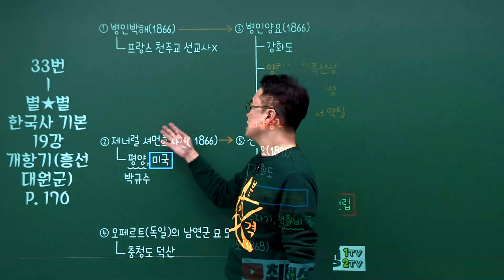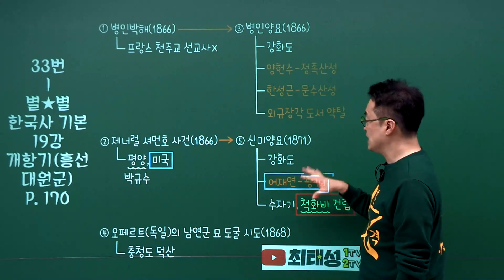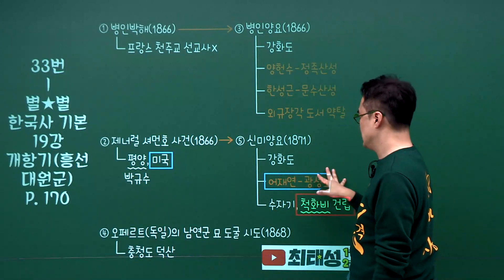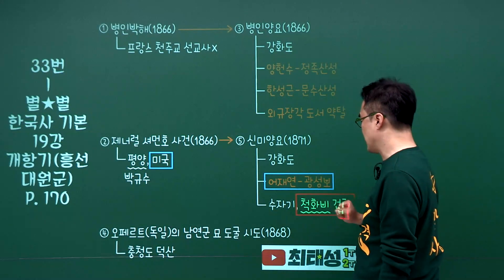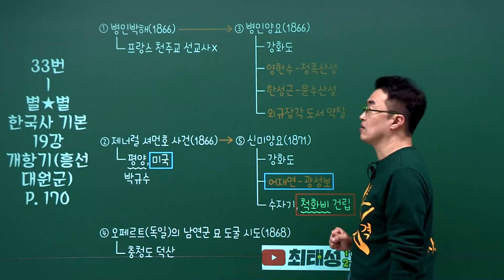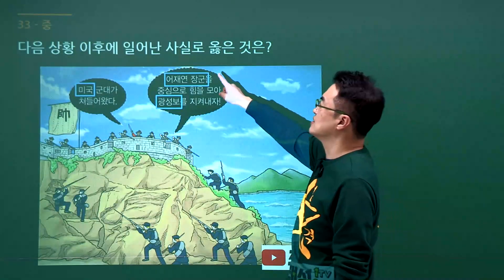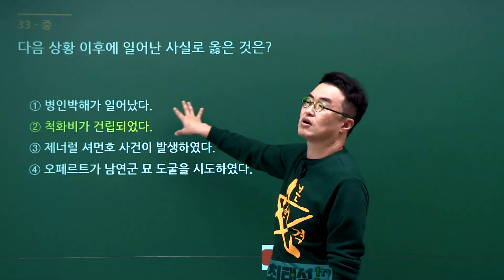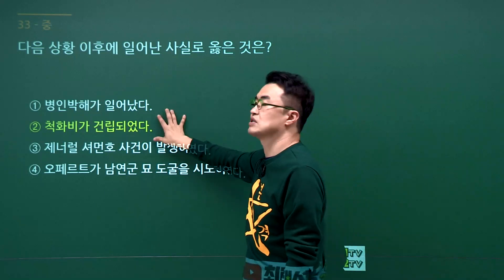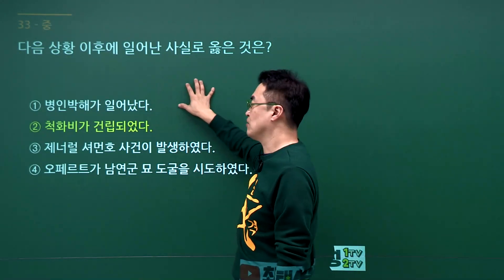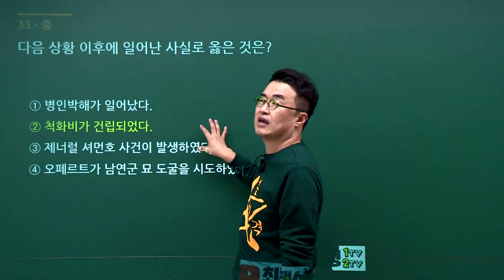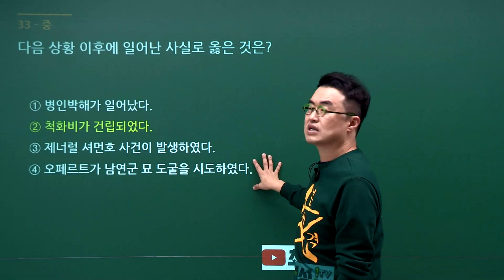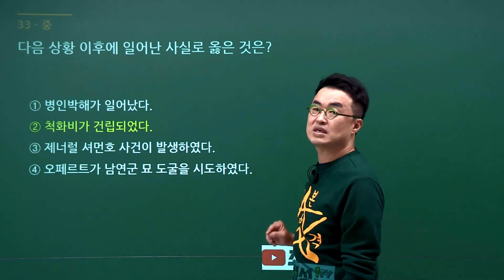신미양요 문제입니다. 제너럴 셔먼호 사건이 미국과 관련되어 있고, 신미양요 직후에 척화비를 건립했습니다. 문제에서 어재연이 등장했으니 신미양요입니다. 신미양요 이후에 척화비를 건립했다는 2번이 정답입니다. 병인박해는 병인양요와 연결되고, 제너럴 셔먼호 사건의 결과가 신미양요입니다. 정답은 2번입니다.